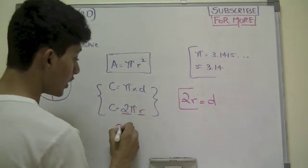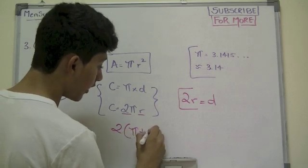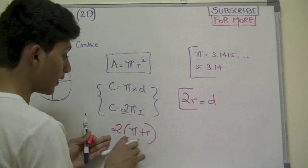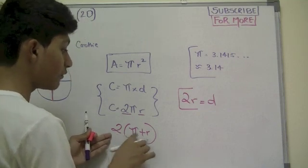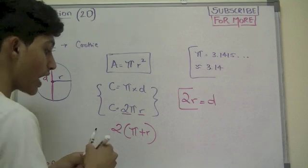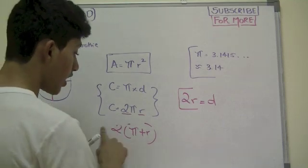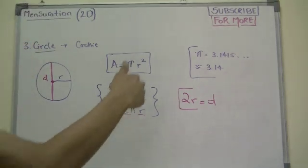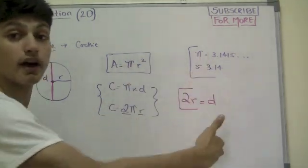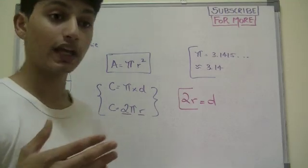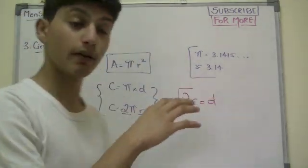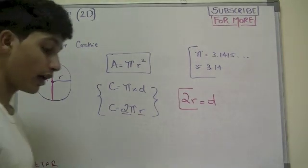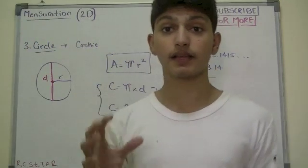So instead of saying two times pi times r, we can just use pi times d. Notice that we are not doing two times pi plus r, because that would be using the distributive property incorrectly - two times pi and then adding that to two times the radius. We are not doing that here. That's wrong because we are multiplying, not distributing. Knowing these things about circles, let's go ahead and move on to our next 2D figure.